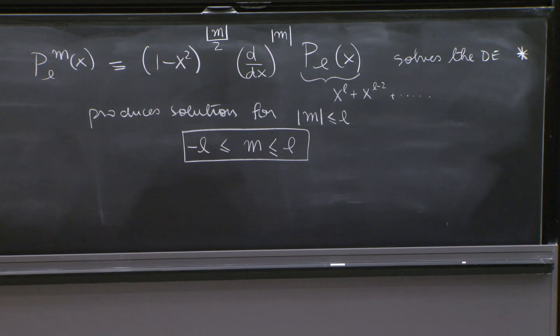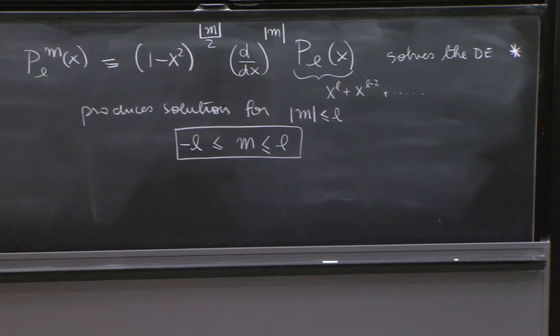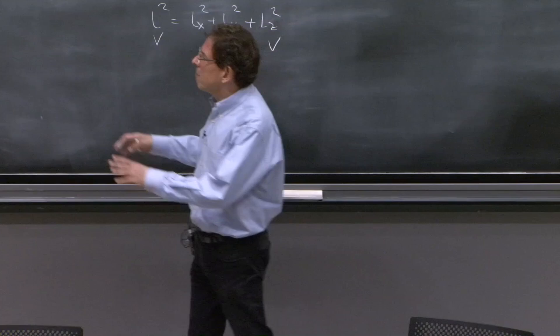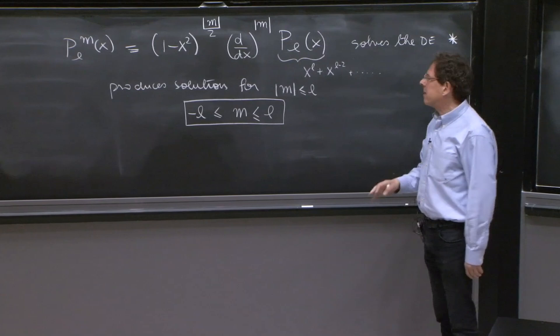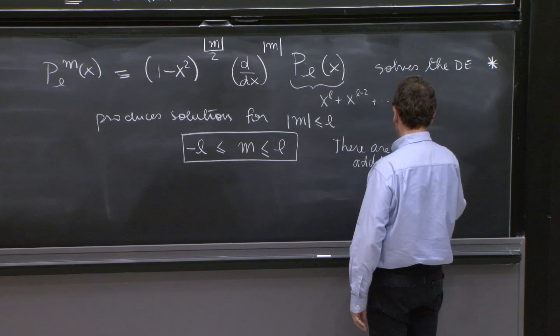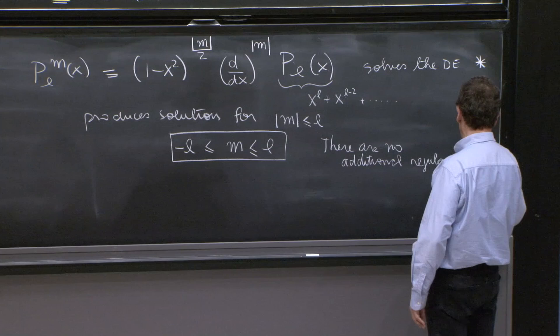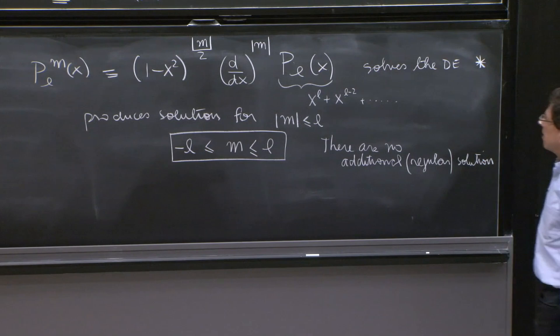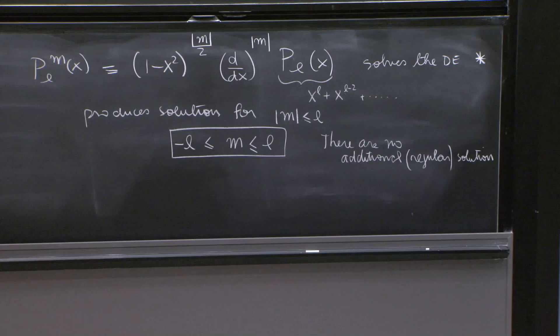So this produces solutions for m, absolute value of m, less or equal to l, and therefore m in between l and minus l. But that's not all that happens. There's a little more that takes mathematicians or some skill to do is to show that there are no more solutions. You might seem like you were very clever, and you found some solutions. But it's a theorem that there are no more solutions. No additional regular solutions.